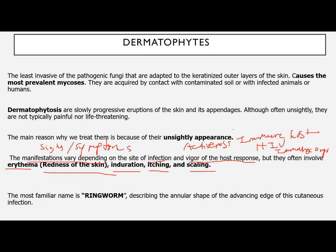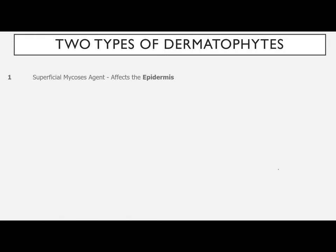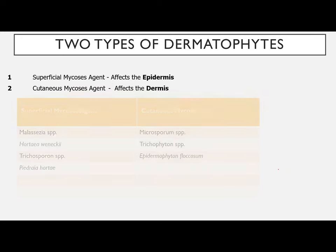The most familiar name associated with dermatophytes is ringworm. It's called ringworm because of the annular shape of the advancing edge of this cutaneous infection — it presents as a ring-type skin infection. The two types of dermatophytes are: superficial mycosis, which affects the epidermis, and cutaneous mycosis, which affects the dermis.